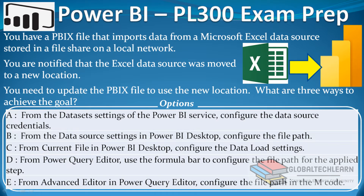Let's look at the options. The first option is from the dataset settings of the Power BI service, configure the data source credentials — there is no such option in dataset settings, only data source settings, so we can skip this. The next option is from data source settings in Power BI Desktop, configure the file path — this option is available in the query editor. Option C is from current file in Power BI Desktop, configure the data load settings — this is not related to the Excel source connection, so we skip it. Option D is from Power BI query editor, use the formula bar to configure the file path for the applied steps — the formula bar is available in Power BI Desktop, so we can try this. Option E is from the advanced editor in Power Query editor, configure the file path in M code.